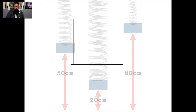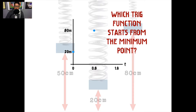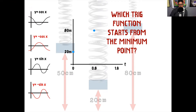Here I have a graph with an x-axis and a y-axis. On my x-axis I put time, with 0 and 0.8 marked — because the problem tells me that at 0.8 seconds it reaches its maximum height — and then 1.6. On my y-axis I have 20 centimeters, which is the lowest it ever reaches, and 80 centimeters, which is the highest. I've written down the different trig functions on the left: y = cosine x, negative cosine x, y = sine x, and negative sine x.